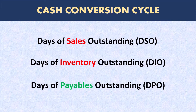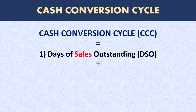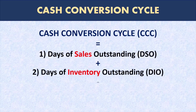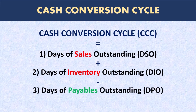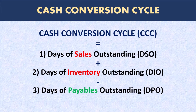So there are three components that impact the number of days it takes a business to complete a cash conversion cycle: number one, the days of sales outstanding; number two, days of inventory outstanding; and number three, days of payables outstanding. The formula is: cash conversion cycle in days equals days of sales outstanding (DSO) plus days of inventory outstanding (DIO) minus days of payables outstanding (DPO). Now how do we calculate each one of them for a business?